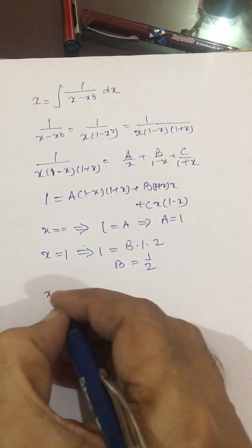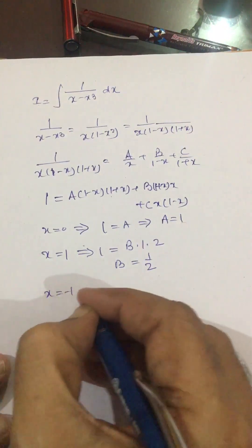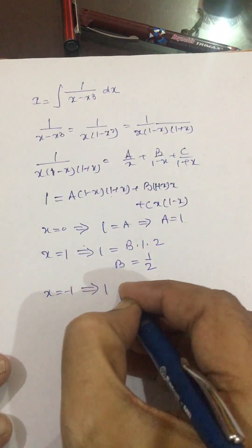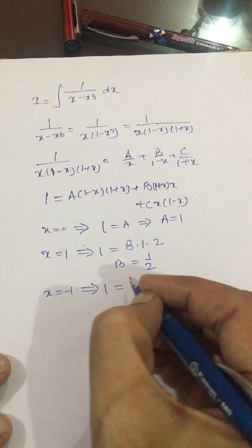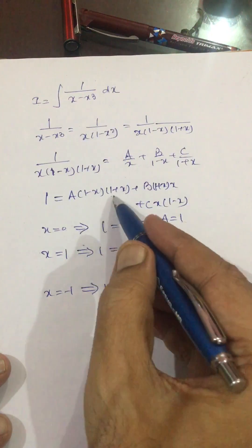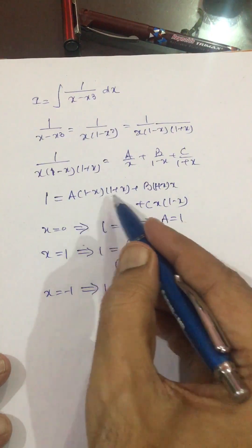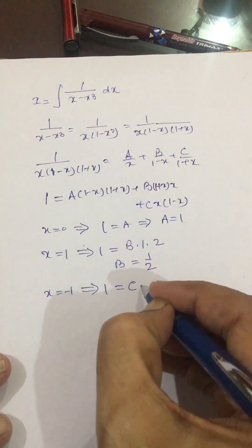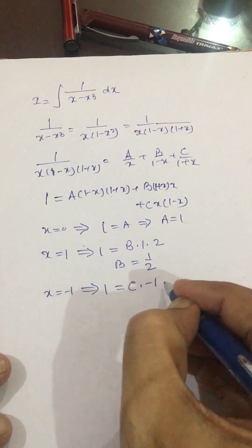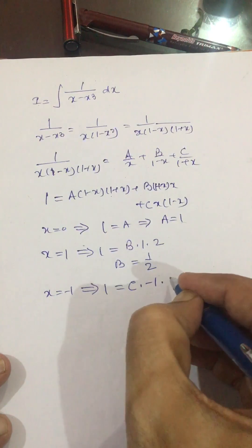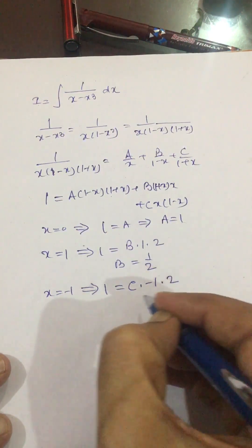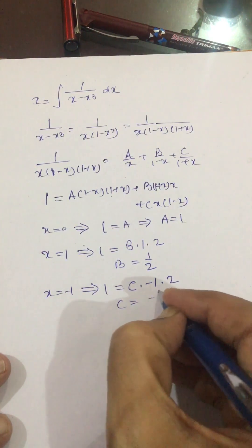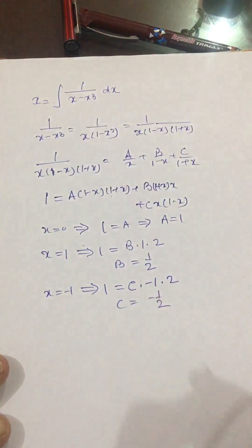Putting x equal to minus 1, the A term becomes 0 and the B term becomes 0, leaving 1 equals C times (minus 1) times 2. So C equals minus 1 over 2.